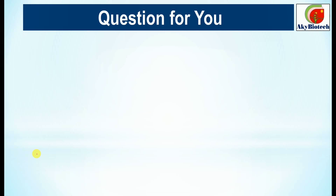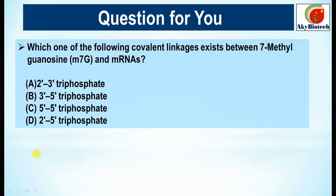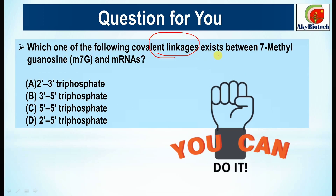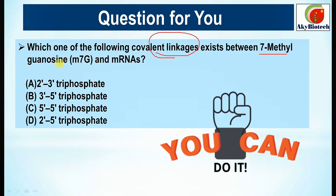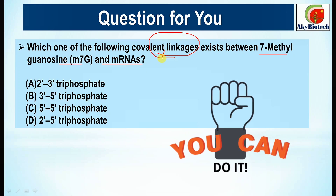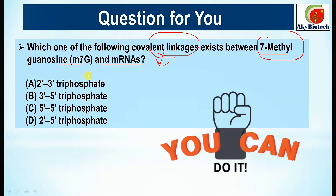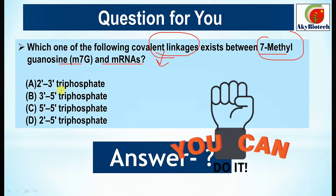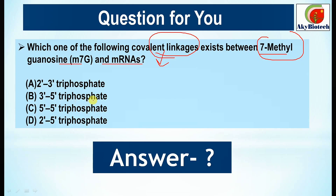Here comes a new question for you. Please try to solve it and give the answer in the comment box: which one of the following covalent linkages exists between 7-methyl-guanosine and mRNA? Options are: 2'-to-3' triphosphate, 3'-to-5' triphosphate, 5'-to-5' triphosphate, or 2'-to-5' triphosphate. Pick the correct option and give the answer in the comment box.